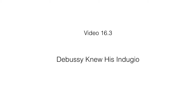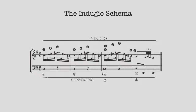The Indugio schema, which refers to a tallying or tarrying on the fourth scale degree before eventually reaching the dominant, was common to Italian, French, and German music. J.S. Bach uses the Indugio schema at times.